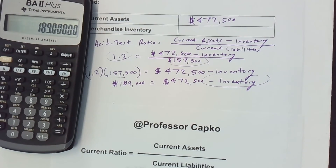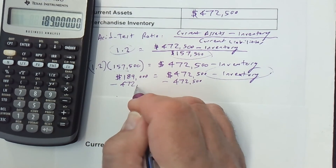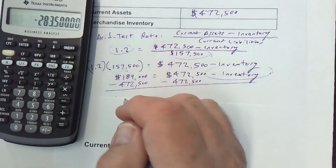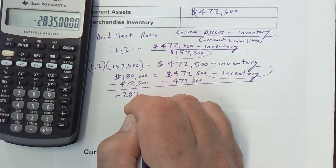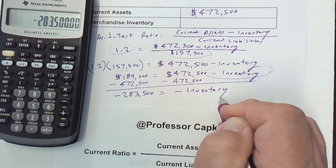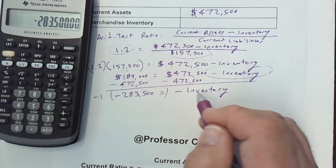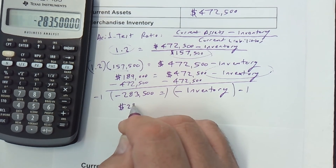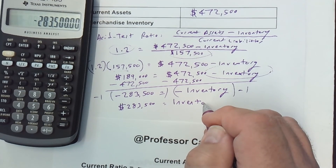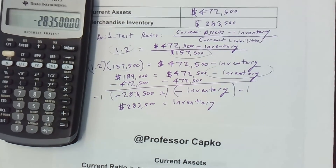I want to get inventory by itself, so I'm going to subtract 472,500 from both sides. That gives a negative number on the left and negative inventory on the right. We can't have negative inventory, so I'll multiply both sides by negative 1. This gives positive inventory equals $283,500. So $283,500 is our merchandise inventory. Now you know how to find both current assets and merchandise inventory if you're only given the ratios.